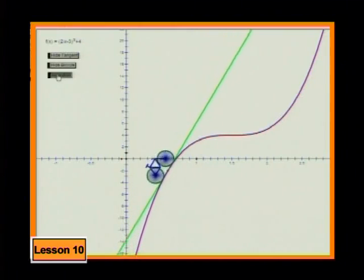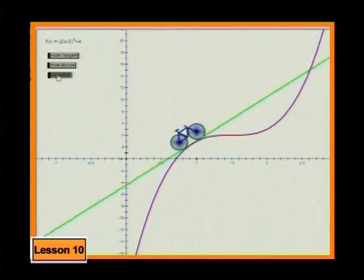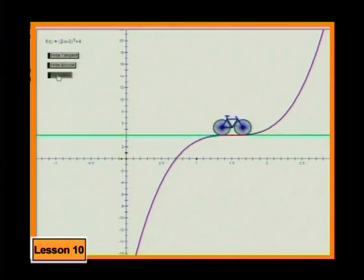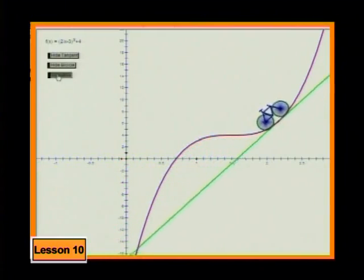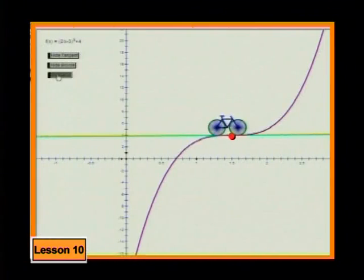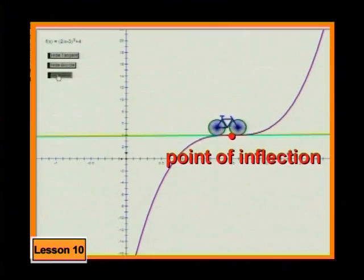But look at this cubic function. Notice how the gradient of the tangent is positive and how it becomes less and less steep. Then here in the middle the gradient is zero for an instant. After that, the gradient of the tangent is again positive and becomes steeper and steeper. There are graphs that have points at which the gradient of the tangent is zero, but the graph does not turn. The point at which the derivative is zero is a point of inflection, not a turning point. So until we know whether the graph turns or not, it is safer to refer to the points where the gradient function is zero as stationary points.